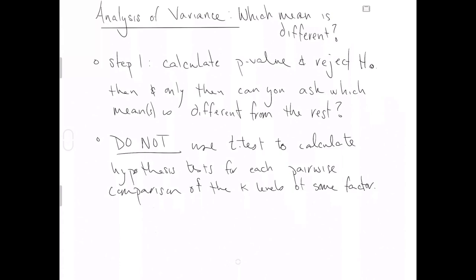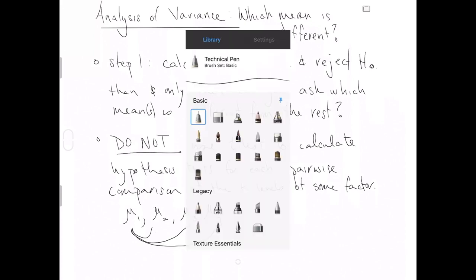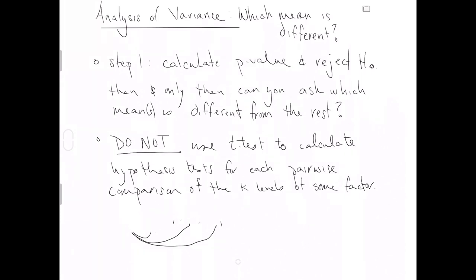It is all too common in the world of applied statistics to see students, practitioners, researchers say I don't like analysis of variance because it doesn't tell me which mean is different. So instead, I'm going to do something clever. I'm going to break up all the k levels of my categorical explanatory variable into two groups. Like, if I had mu1, mu2, mu3, and mu4, the idea is compare mu1 to mu2, and in a different t-test compare mu1 to mu3, and in a different t-test compare mu1 to mu4. I urge you strongly do not do this rather clever but inappropriate idea. It is the wrong way to evaluate which mean is different from the rest.